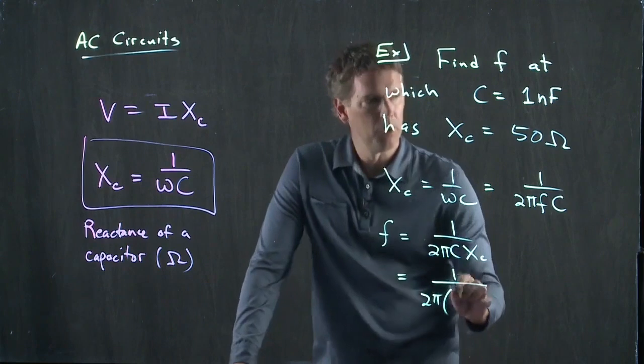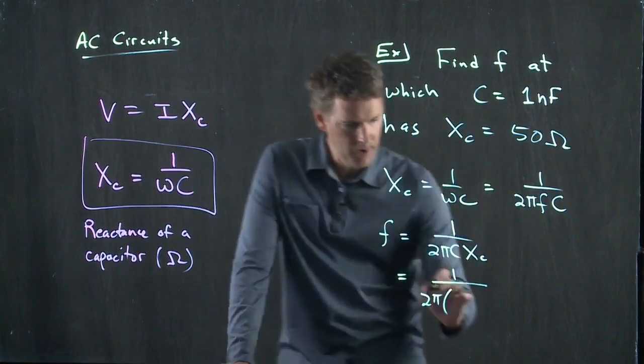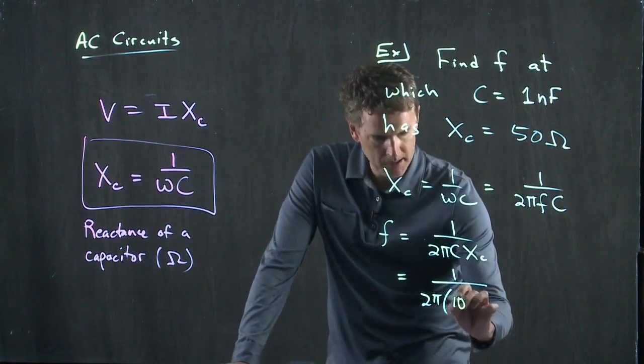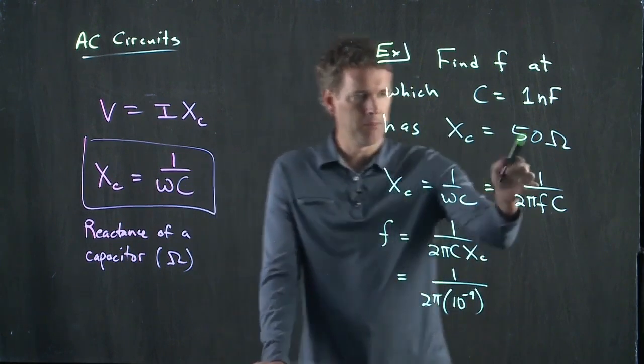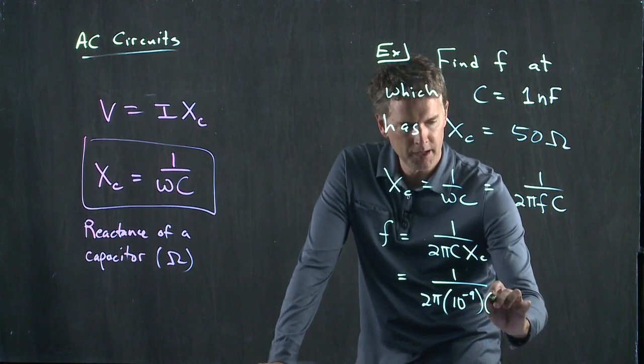C, we said, was 1 nanofarad, which is 10 to the minus 9 farads. X sub C, we said, was 50 ohms.